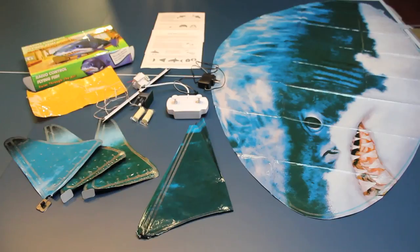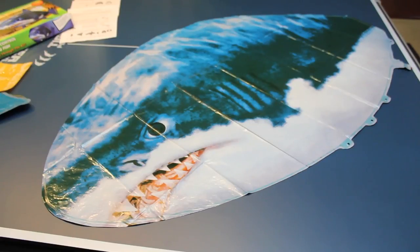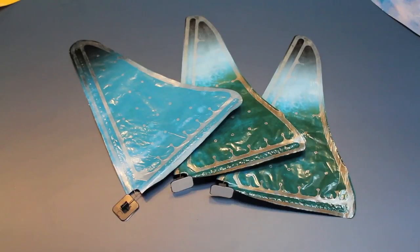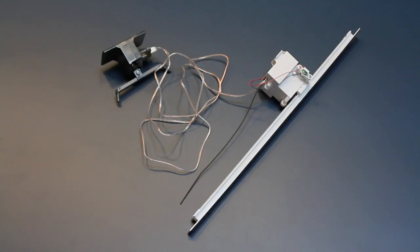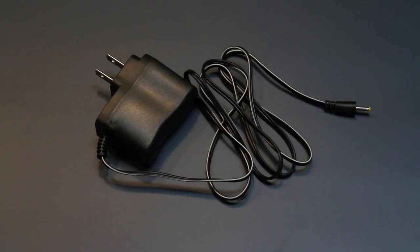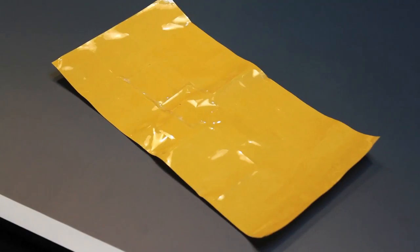Unpack your box and remove all the contents, which include fish or shark body, fish tail, three fins for the shark design or four fins for the fish design, pod and track with tail fin assembly, controller, charger, putty, and clear tape.